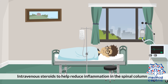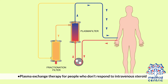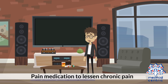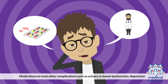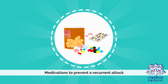Treatment options include intravenous steroids to help reduce inflammation in the spinal column, plasma exchange therapy for people who don't respond to intravenous steroids, antiviral medications for people with a viral infection of the spinal cord, pain medication to lessen chronic pain, medications to treat other complications such as urinary or bowel dysfunction and depression, and medications to prevent a recurrent attack.